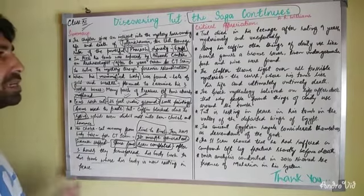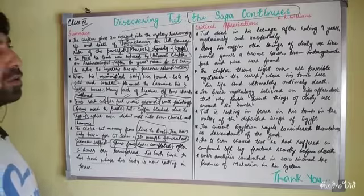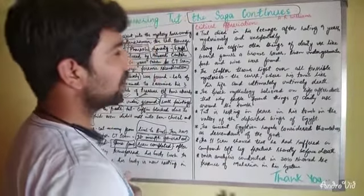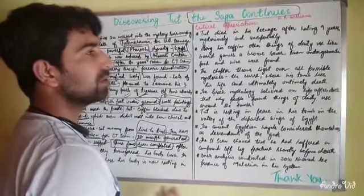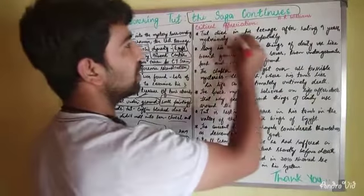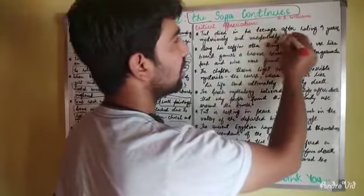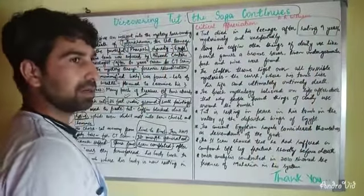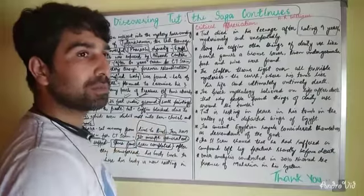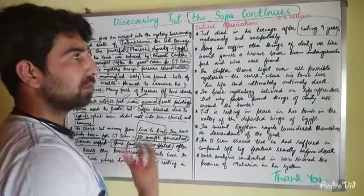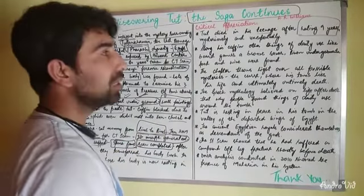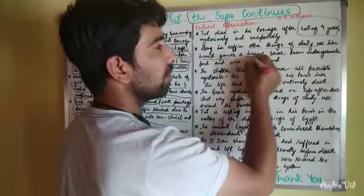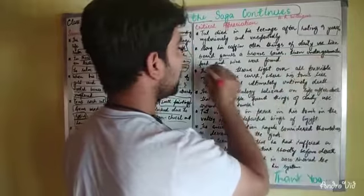Now for the critical appreciation: Tut died in his teenage years after ruling for nine years — mysteriously and unexpectedly. Nobody knew the real reason behind his death. Along with his coffin, there were items of daily use like board games, bronze razors, linen garments, food, and wine, which were found placed with him.